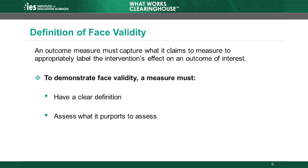First, let's examine the concept of face validity. An outcome measure must capture what it claims to measure for the study to appropriately label the intervention's effect on an outcome of interest. The WWC says that an outcome measure has face validity when it has a clear definition and captures what it claims to measure.